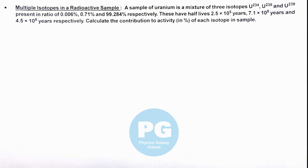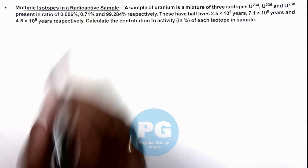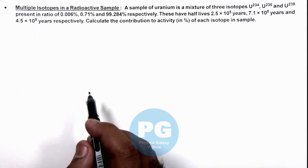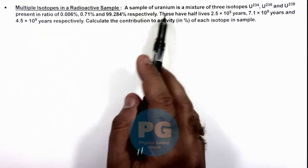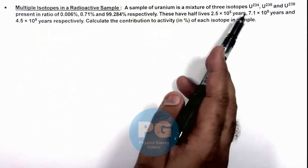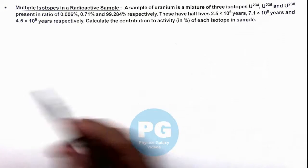In this illustration we'll discuss multiple isotopes in a radioactive sample. Here we are given that a sample of uranium is a mixture of isotopes U-234, U-235, and U-238.